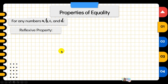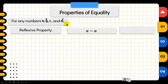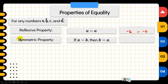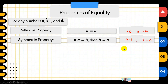For the properties of equalities, for any real numbers A, B, C, and D, we have the reflexive property: any real number is equal to itself. For example, negative 6 equals negative 6. Another is the symmetric property, involving two terms: if A equals B, then B equals A. Like in algebra, if X equals 3, it's equivalent to 3 equals X. That's the symmetric property.